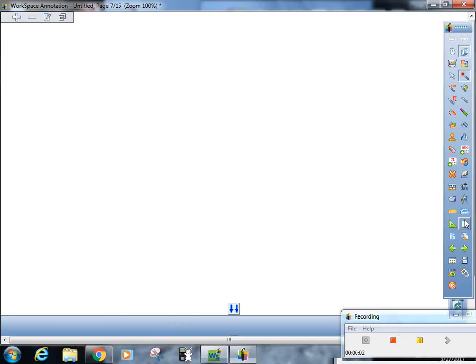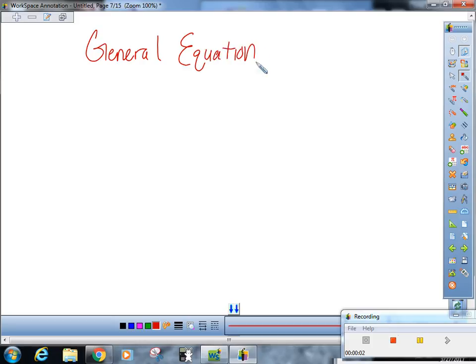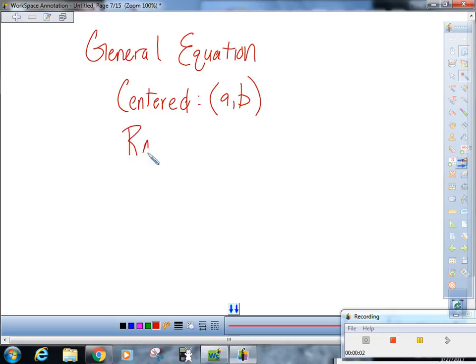So, the general equation of a circle centered at a, b with a radius r just comes from this. That's x minus a squared plus y minus b squared equals r squared.